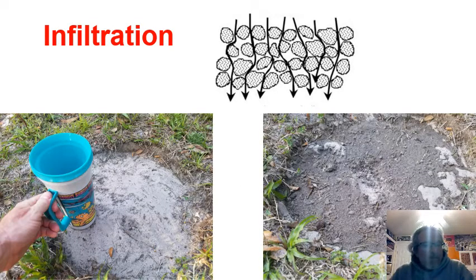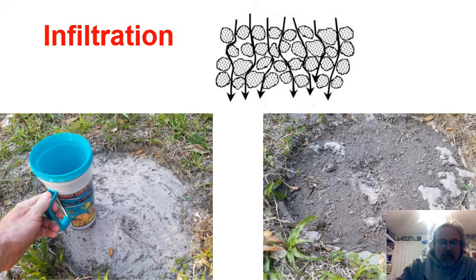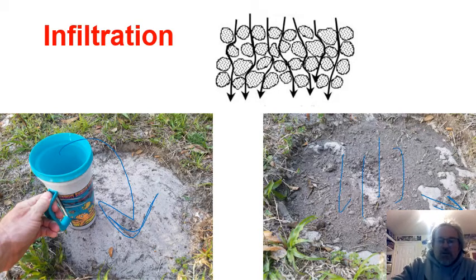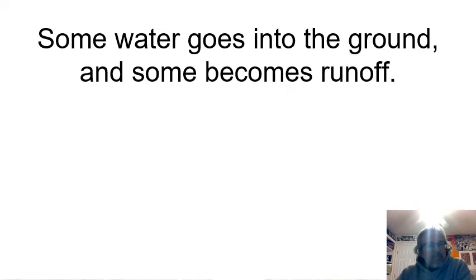First term: infiltration. Infiltration is simply the process of water going into the ground, as opposed to moving across the surface, which is what we call runoff. I took a cup of water and poured some water into the ground right here, and you notice it didn't slide off anywhere — it went into the ground. It's still a little damp, it's still infiltrating, but that's the process of infiltration.